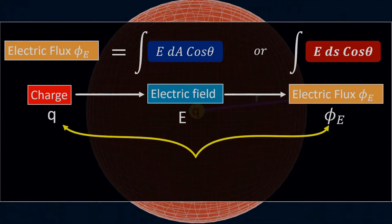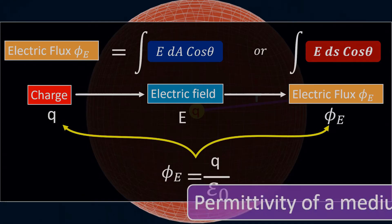then the total electric flux φ_E linked with the imaginary surface will be equal to Q divided by epsilon naught, where epsilon naught is the permittivity of a free space.